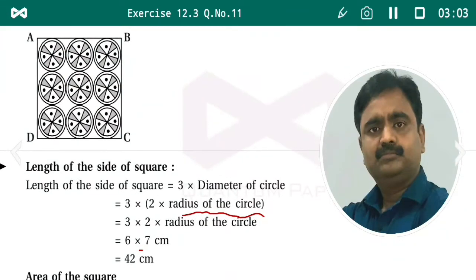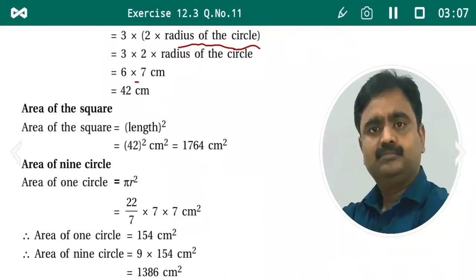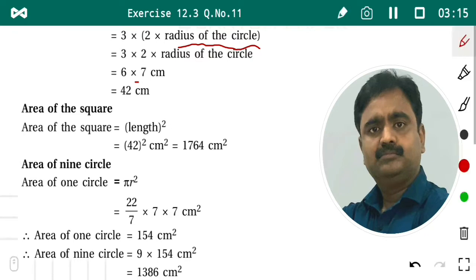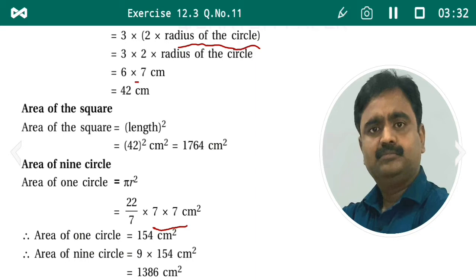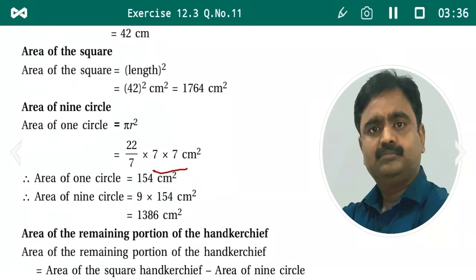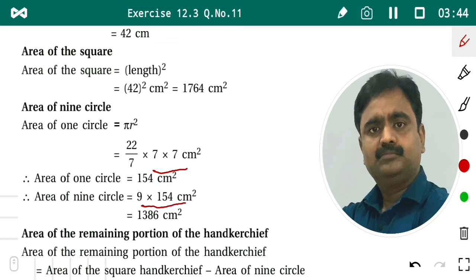To find the area of nine circles, first we find the area of one circle, which is πr². The value of π is 22/7 and radius is 7, so area of one circle = (22/7) × 7 × 7 = 154 centimeter square. Therefore, area of nine circles = 9 × 154 = 1386 centimeter square.